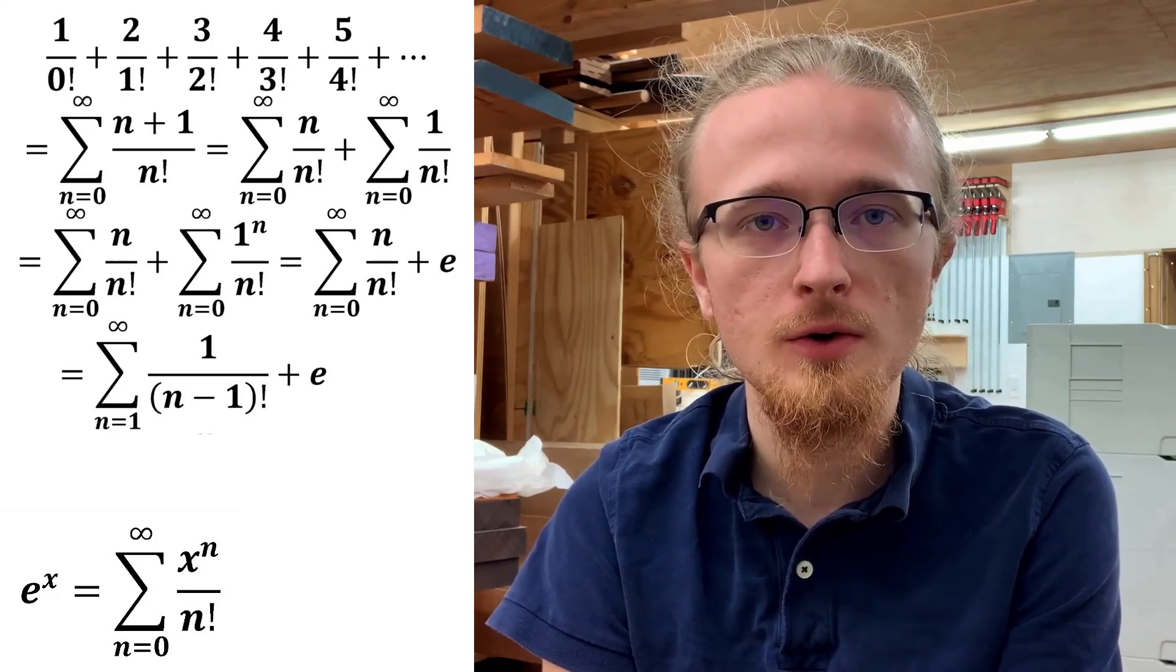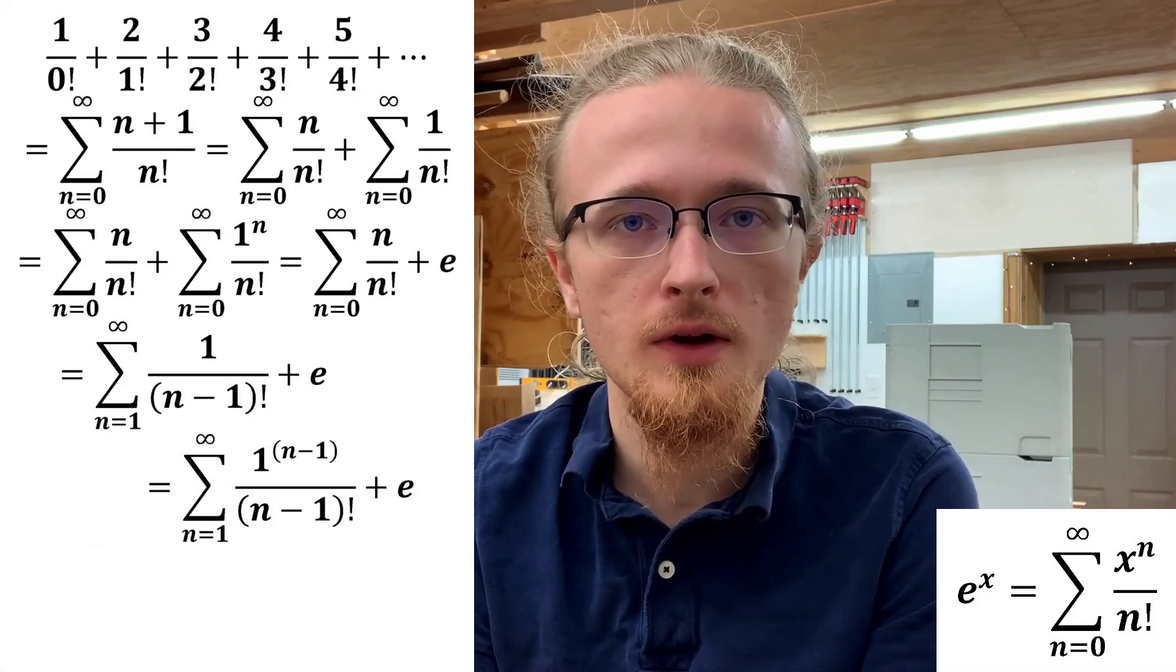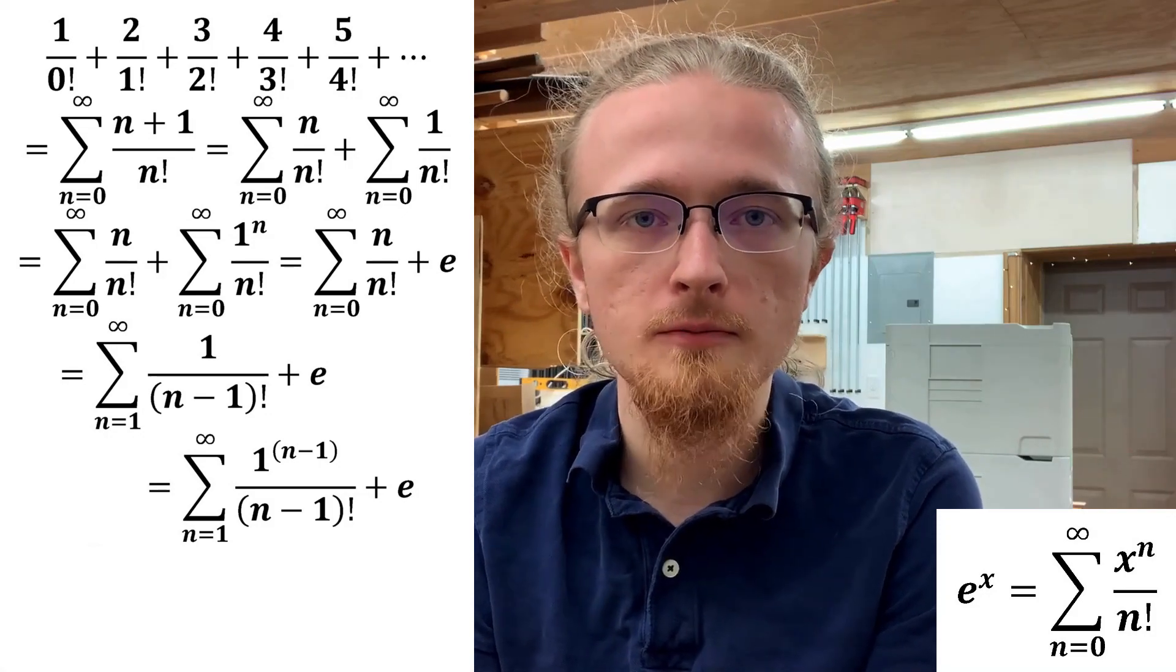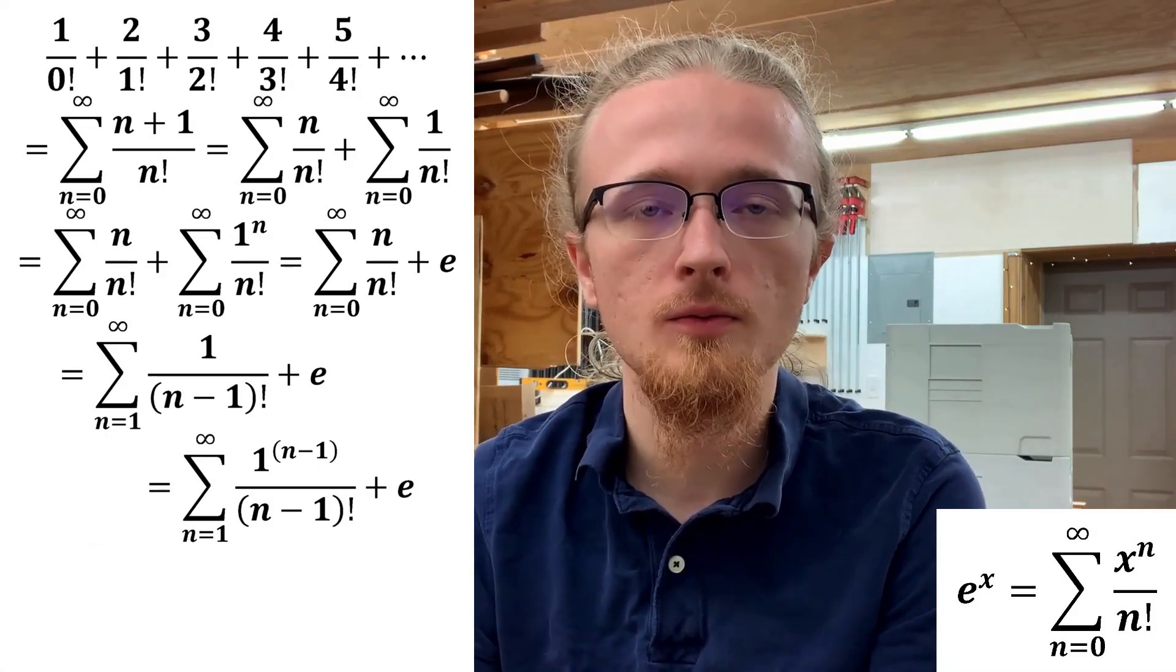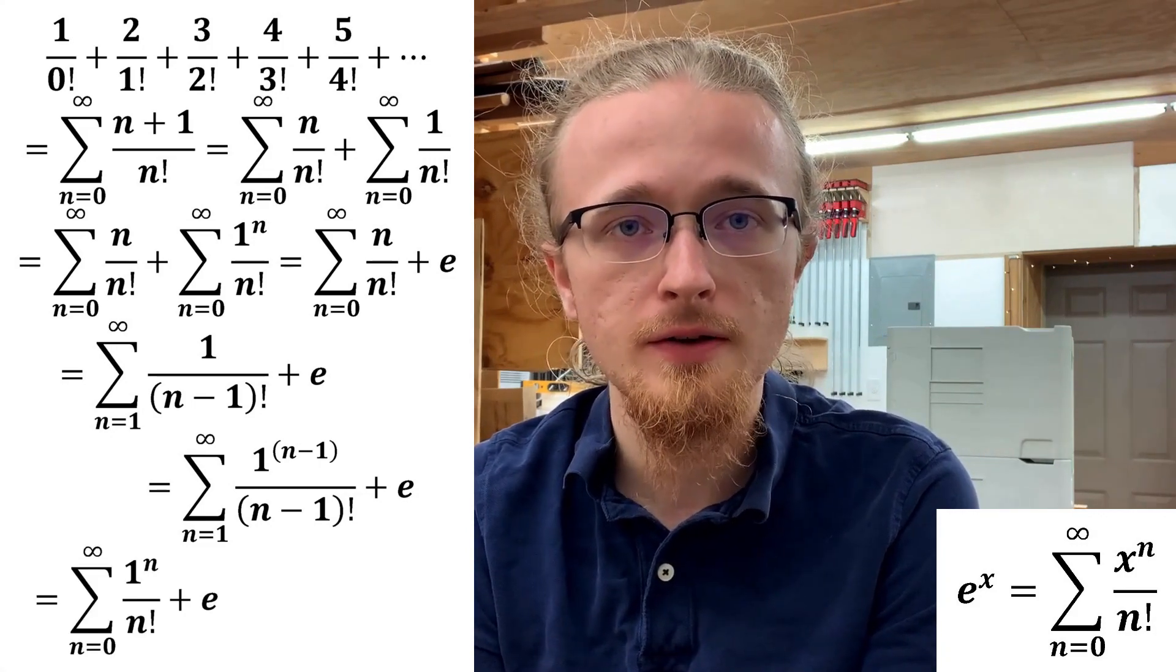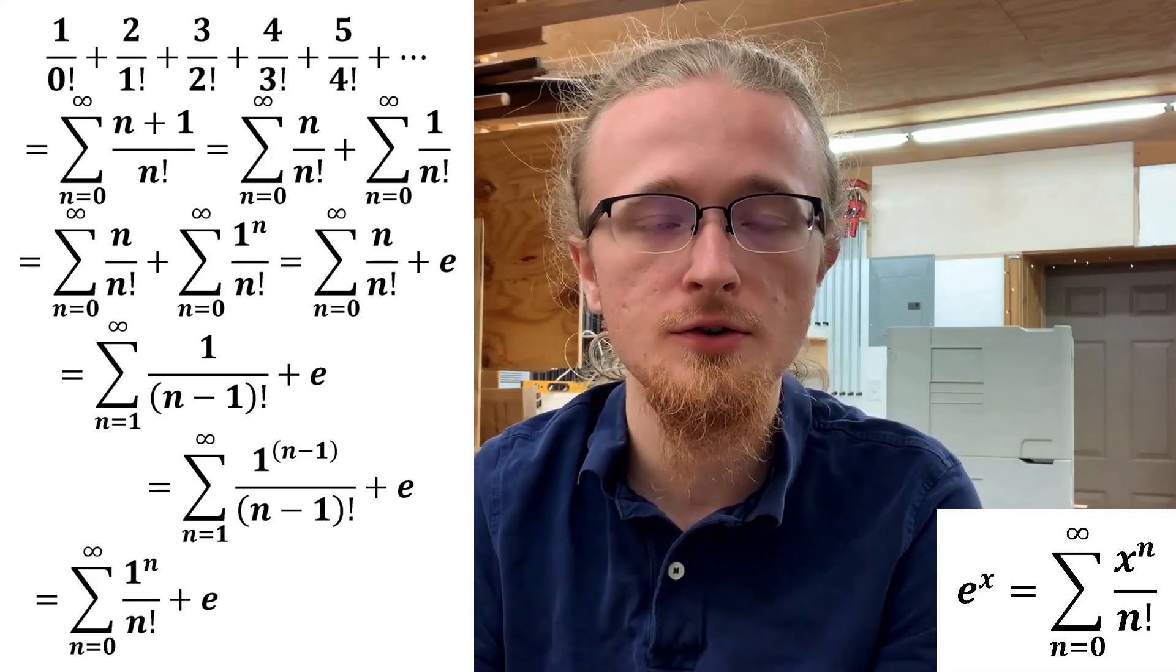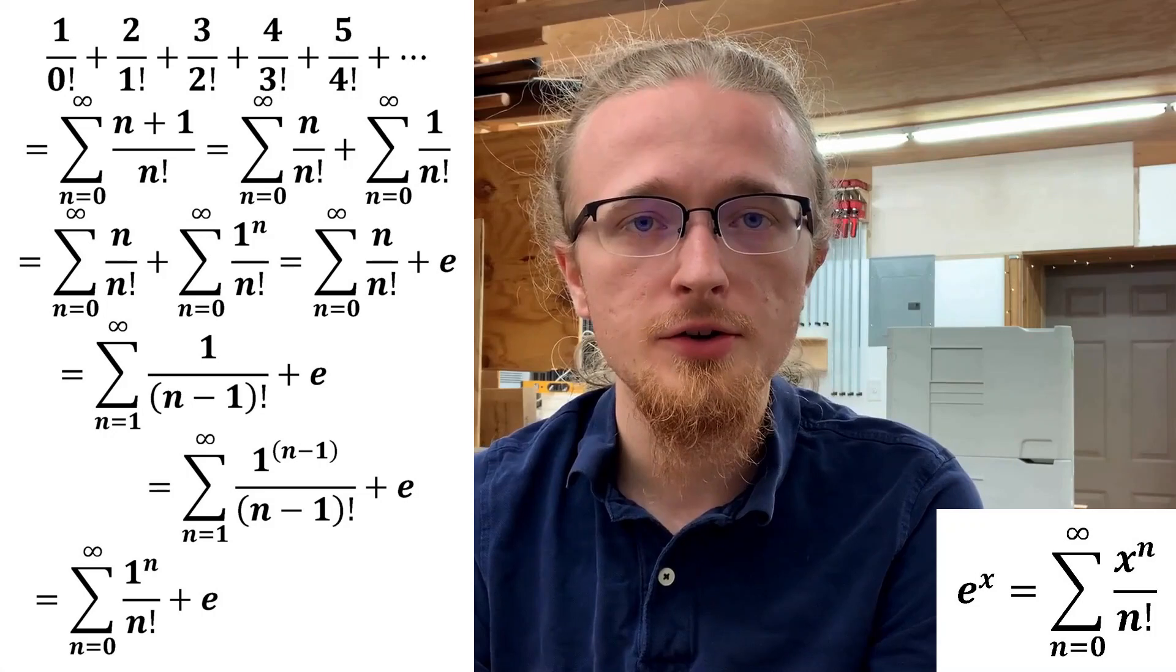From here, we can use a similar trick to what we did with the second term. We can rewrite the 1 in the numerator as 1 to the n minus 1, again, because 1 raised to anything is just 1, and then from there we can decrement the lower limit of the sum without changing the value of the sum, assuming we also add 1 to the integer that we're summing over.